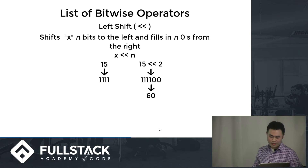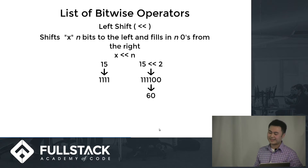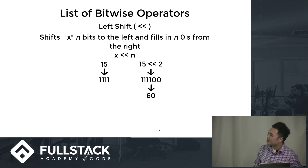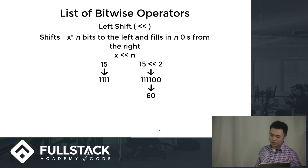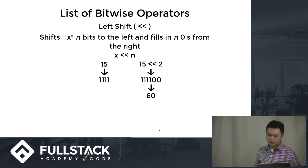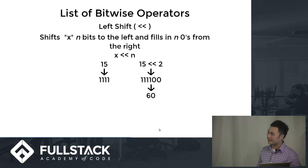So now we head on to left shift. Left shift shifts X bits to the left and fills the right side with zeros. So 15 is 11111. When you shift 15 two bits to the left, it becomes 11111 with two zeros added from the right, which results in 111100, which is 60.